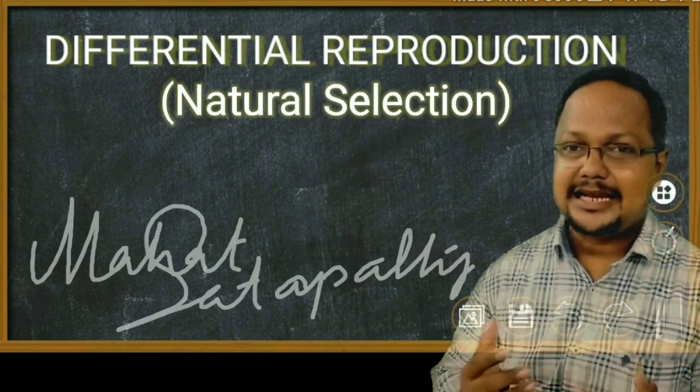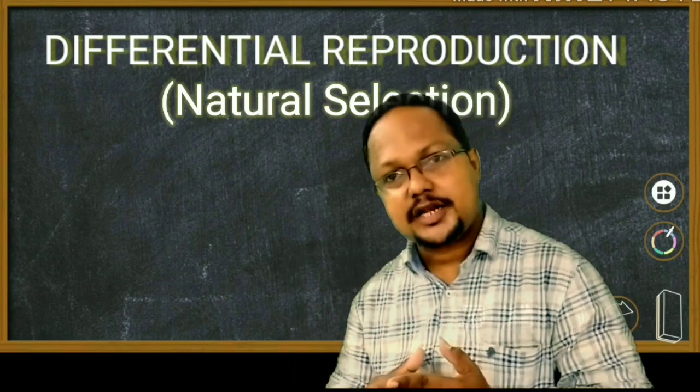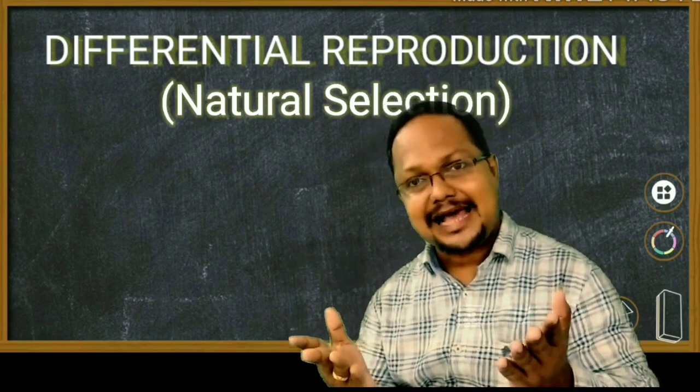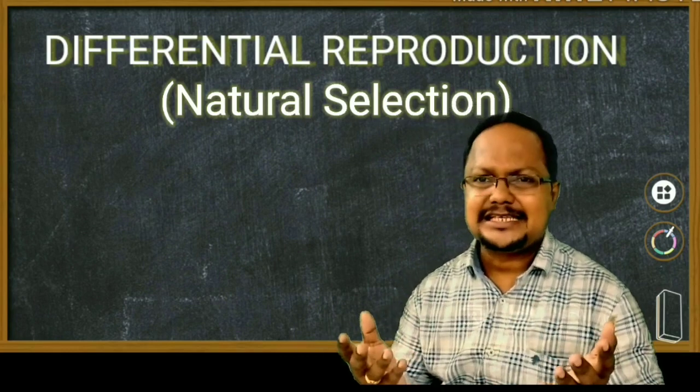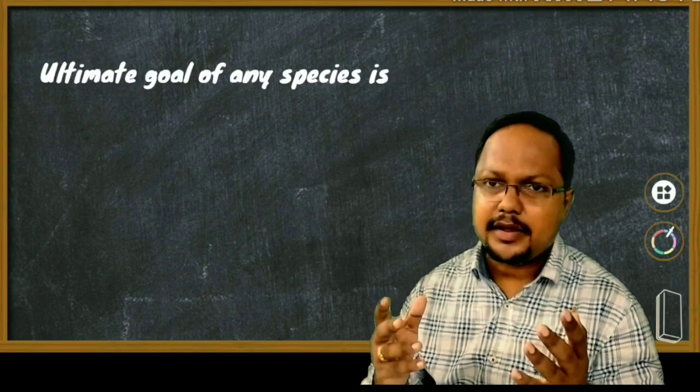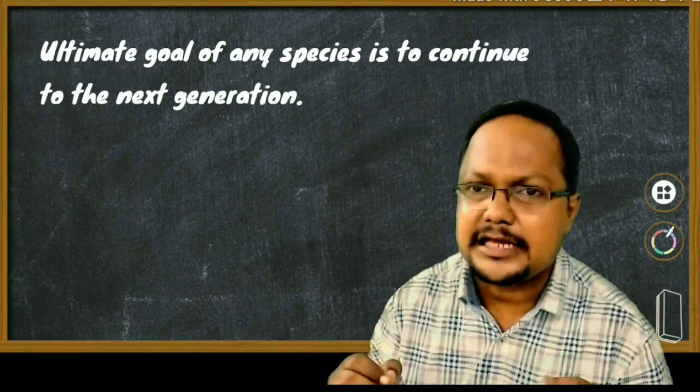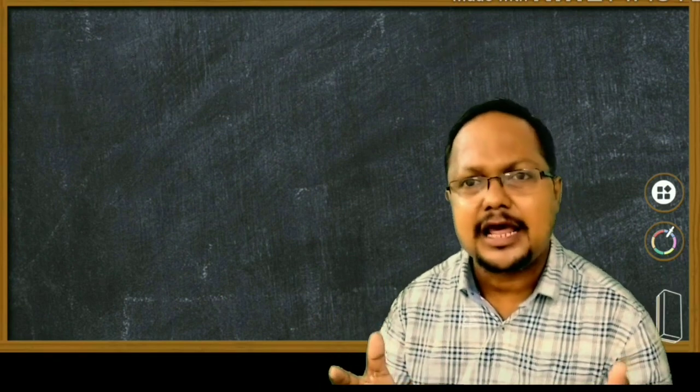Welcome students. Now we will study differential reproduction, which is also regarded as similar to natural selection. From an evolutionary perspective, the ultimate goal of any species is to continue to the next generation.